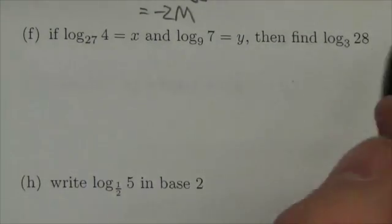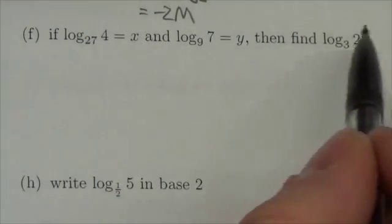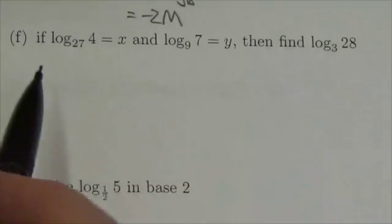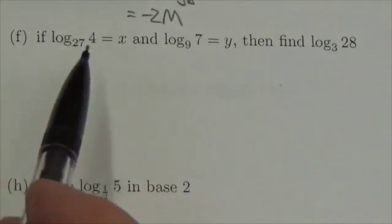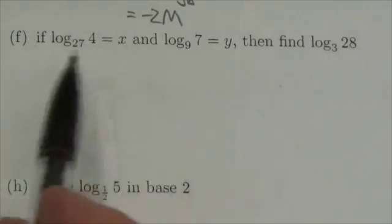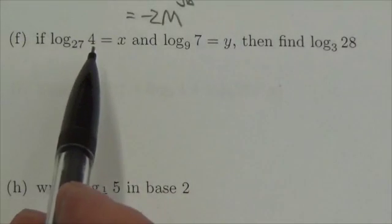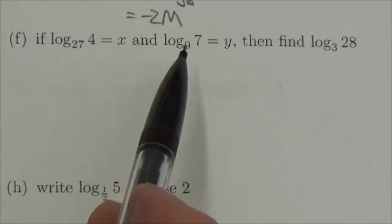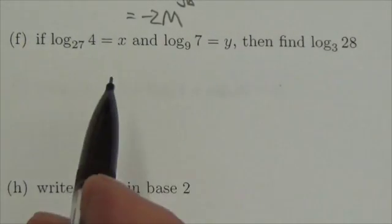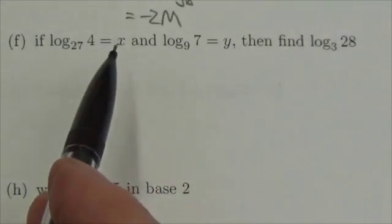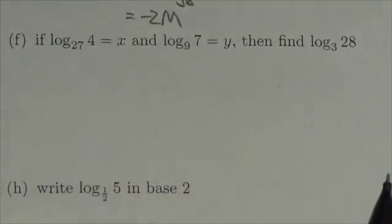Hi everyone. In this question I'm being asked to take this log base 3 of 28 and rewrite it in light of these restrictions: that log base 27 of 4 equals x, and log base 9 of 7 equals y. So what I'm being asked to do is basically rewrite this in terms of x's and y's.